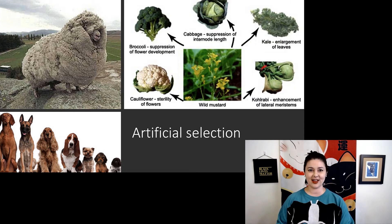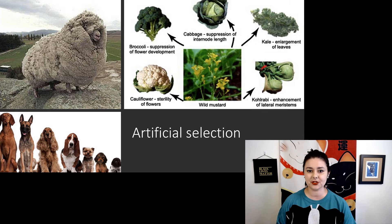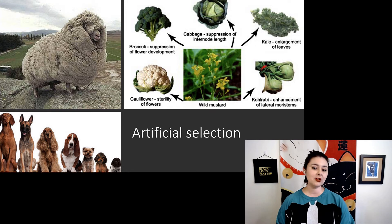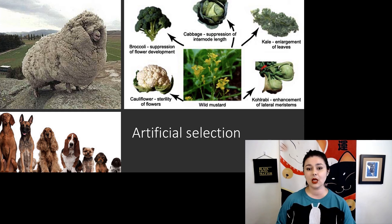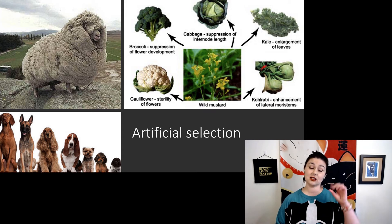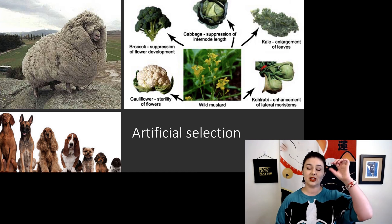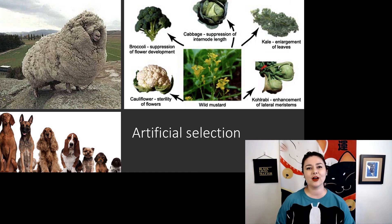Another important thing to look at is plants. Plants are especially interesting because if you select for different features, you can create very different forms from the same wild ancestor. Here we're looking at the wild mustard plant. If you select for different features, we have gotten several different vegetables. Cauliflower — those flowers are sterile. Broccoli is very similar; we've just suppressed flower development. Cabbage comes from suppressing the internode length on the stalk of these plants.